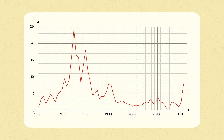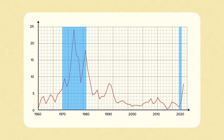This graph shows the level of inflation in the UK between 1960 and 2022. You can see that there was a period of very high inflation in the 1970s. This was caused by a series of economic shocks culminating in the oil crisis of 1973. Inflation has also started to rise again recently.